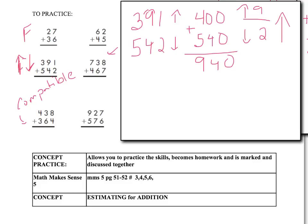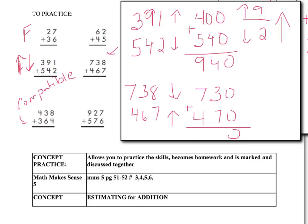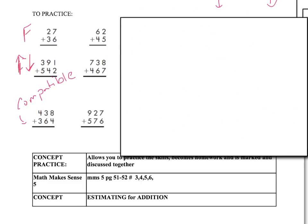Let's try 738 and 467 with compensation. I'll round 738 down to 730. Then 467 — 67 is close to 70, so round up to 470. Adding those: 0 and 0 is 0; 3 plus 7 is 10, put down 0 and carry 1; 1 plus 7 is 8; 8 plus 4 is 12. So the answer is 1,200. I went down 8 and up 3, so this is an underestimate — less than the actual answer. It's very valuable to always go back and take a quick look at your answers to see if they're on the right track.